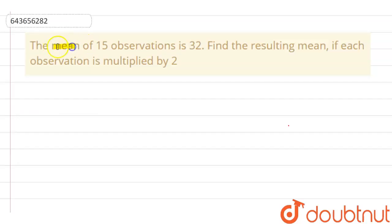The question is: the mean of 15 observations is 32. Find the resulting mean if each observation is multiplied by 2.